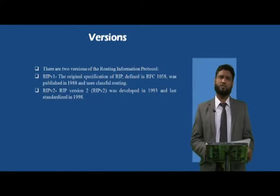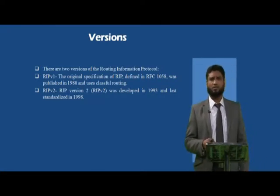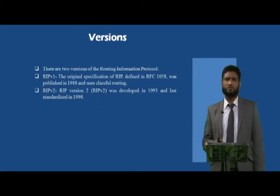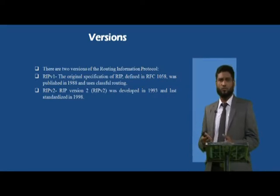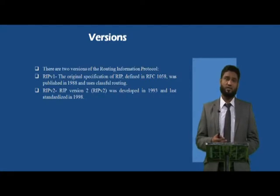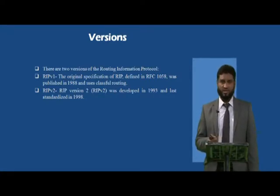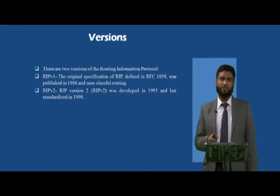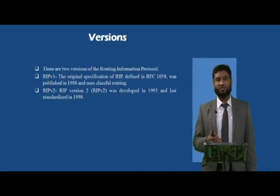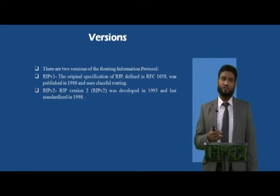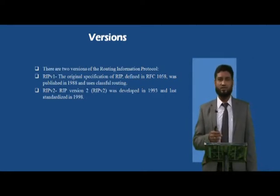There are two versions of RIP: RIP version 1 and RIP version 2, each with some limitations. An important question arises: if two consecutive routers are configured with different versions — one with RIP v1 and one with RIP v2 — what happens? RIP version 2 can send and receive information from RIP version 1, but RIP version 1 can send information but cannot receive from RIP version 2. Therefore, adjacent routers should be configured with the same version — either both RIP v1 or both RIP v2.